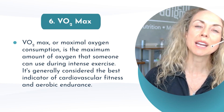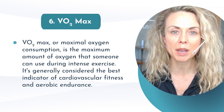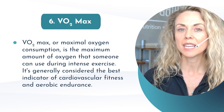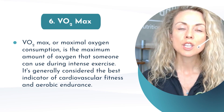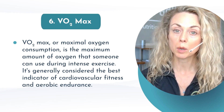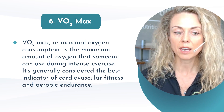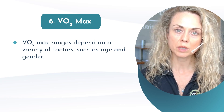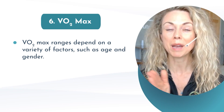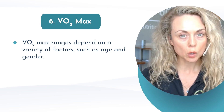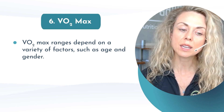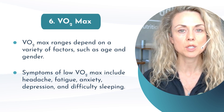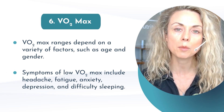The last test is VO2 max — maximum oxygen consumption — which is the maximum amount of oxygen someone can use during intense exercise. It's generally considered the best indicator of cardiovascular fitness and aerobic endurance, and also a great indicator of longevity. You can measure it compared to your baseline or look at age- and gender-specific standards. It can be a great overall indicator of nitric oxide production, and symptoms of low VO2 max can include headache, fatigue, anxiety, depression, and difficulty sleeping. It may be a great tool to incorporate into your patients' programs.